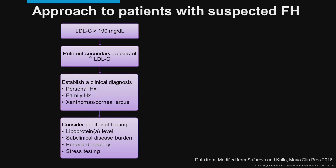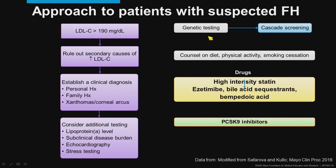How should we approach a patient in whom we suspect FH? Typically, we suspect FH if the LDL is greater than 190 and there is no secondary cause of hypercholesterolemia, such as nephrotic syndrome, cholestatic liver disease, or hypothyroidism. We look for features that increase suspicion: personal history, family history, physical exam signs, and we should consider additional testing including lipoprotein A levels. We can assess subclinical disease burden using CT scans, consider echocardiogram for aortic stenosis if there is an aortic outflow murmur, and stress testing for exertional symptoms. Genetic testing should be employed, and if positive, cascade testing can be facilitated.